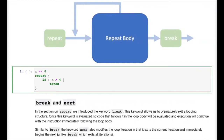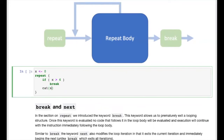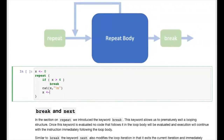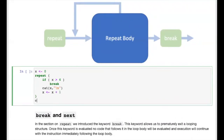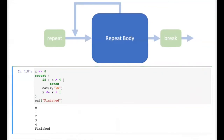The break statement, as soon as it's evaluated, exits the nearest loop body that encloses it, stopping the current iteration and skipping any remaining iterations. When the condition is false, break is not evaluated and the loop continues. We output the current value of x using cat, then increment x. Once x achieves a value greater than 4, the break statement evaluates and the loop exits. Running the code block, we get 0, 1, 2, 3, 4, and then the code after the loop runs.